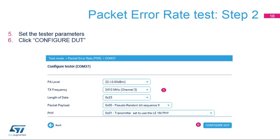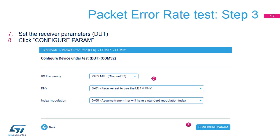Step 2: Configure the Tester. The transmission parameters of the tester can be configured in this screen. The parameters are the same as those of the TX tests. Select the parameters and press CONFIGURE DUT. Step 3: Configure the Receiver, or DUT. The parameters for the receiver are the same as those of the RX test. Set the parameters and then press CONFIGURE PARAM.